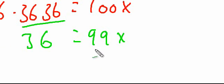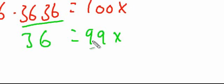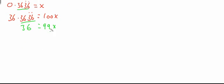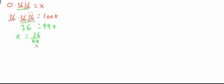Now this is a simple equation. If 36 equals 99x, then x equals 36 divided by 99. And there we have proved that a recurring decimal is equal to a fraction. But we're not done yet — can we simplify this? It turns out yes we can. What goes into both of these numbers?